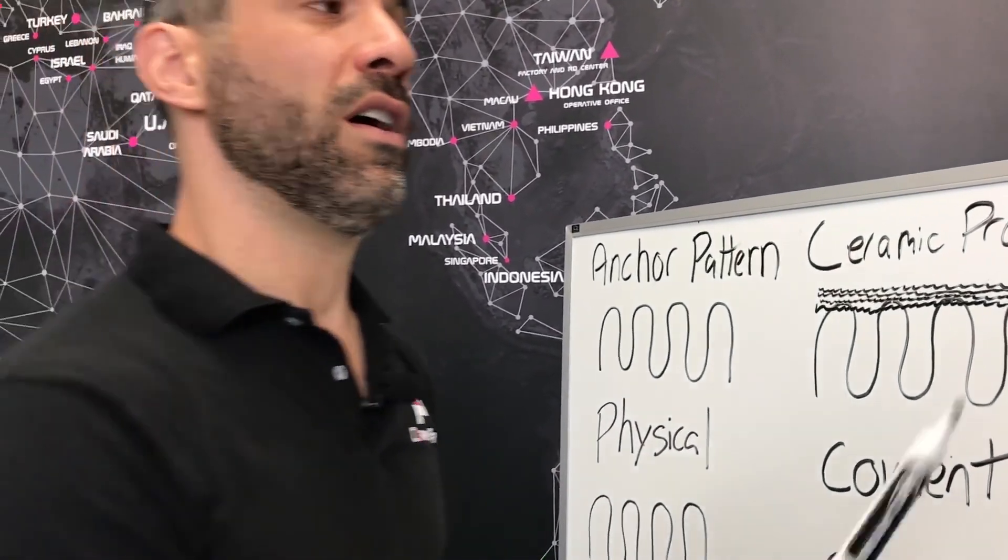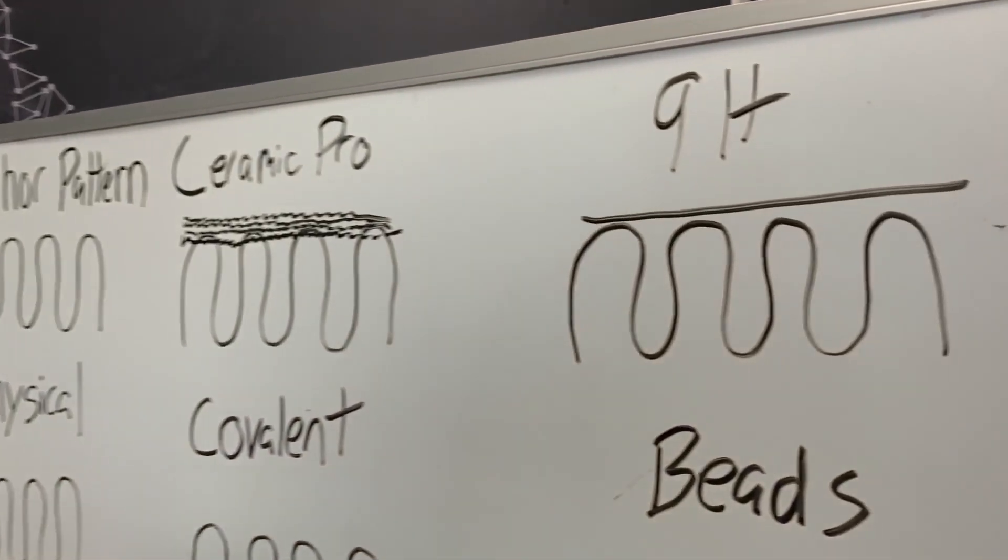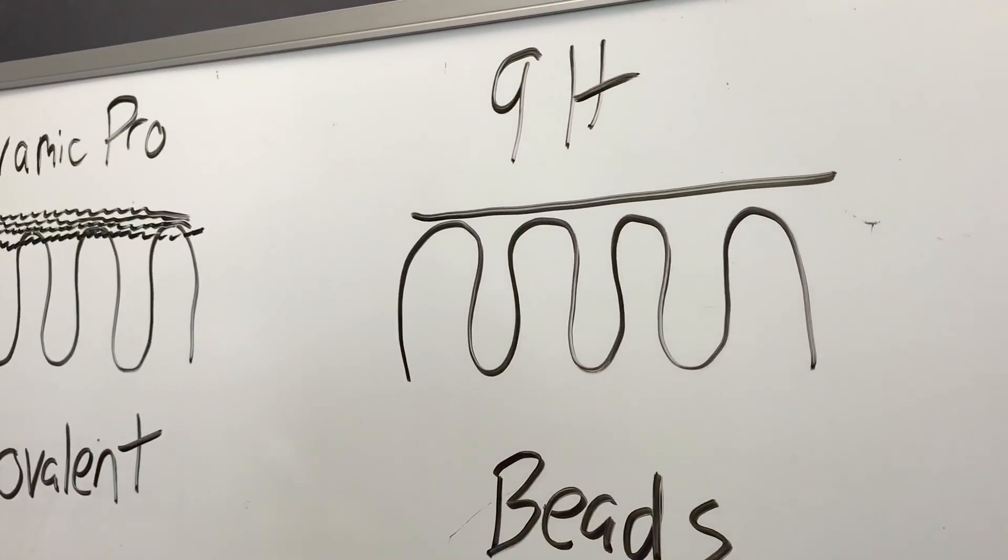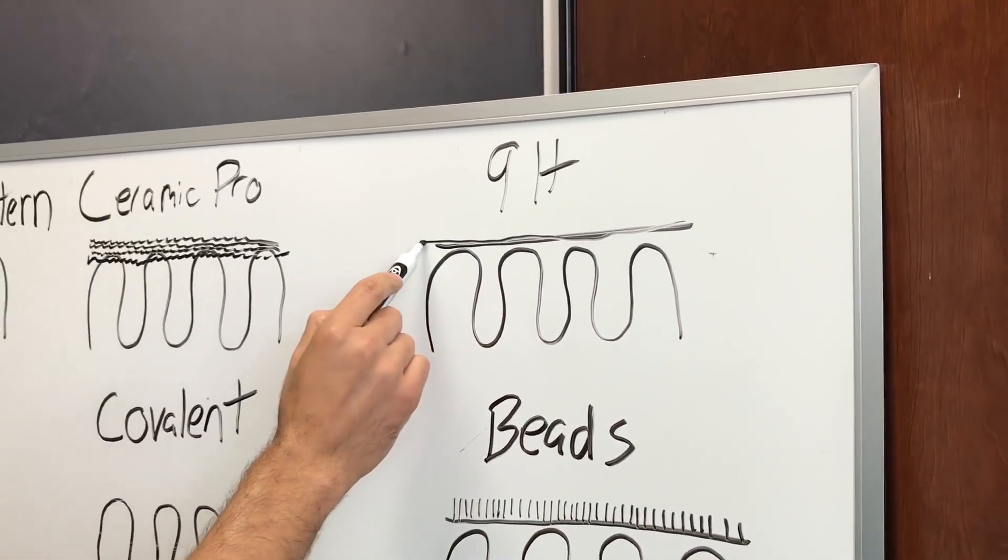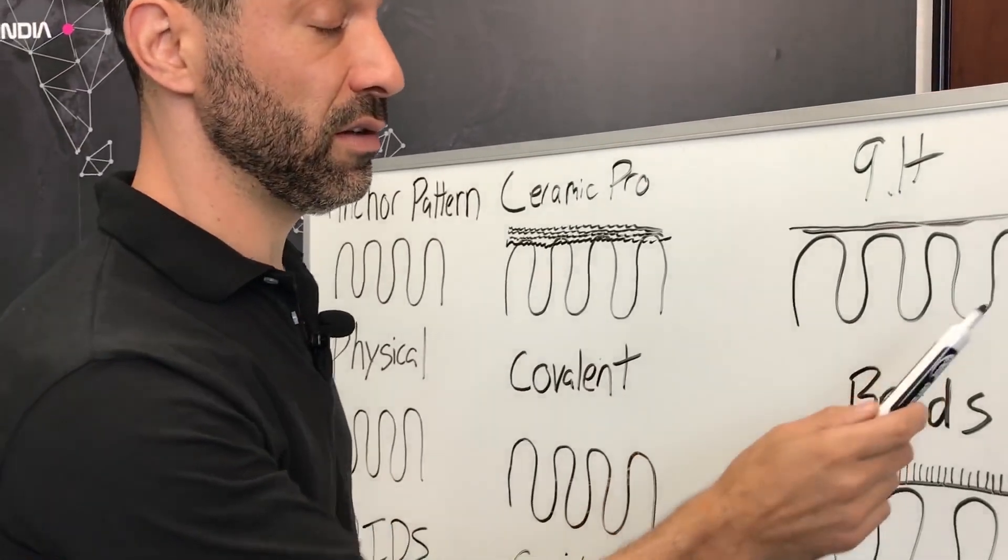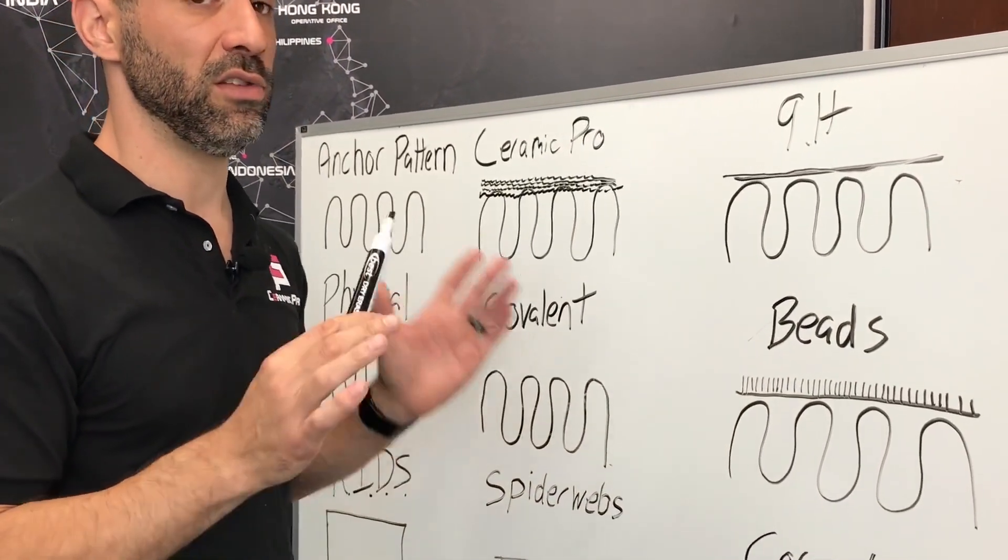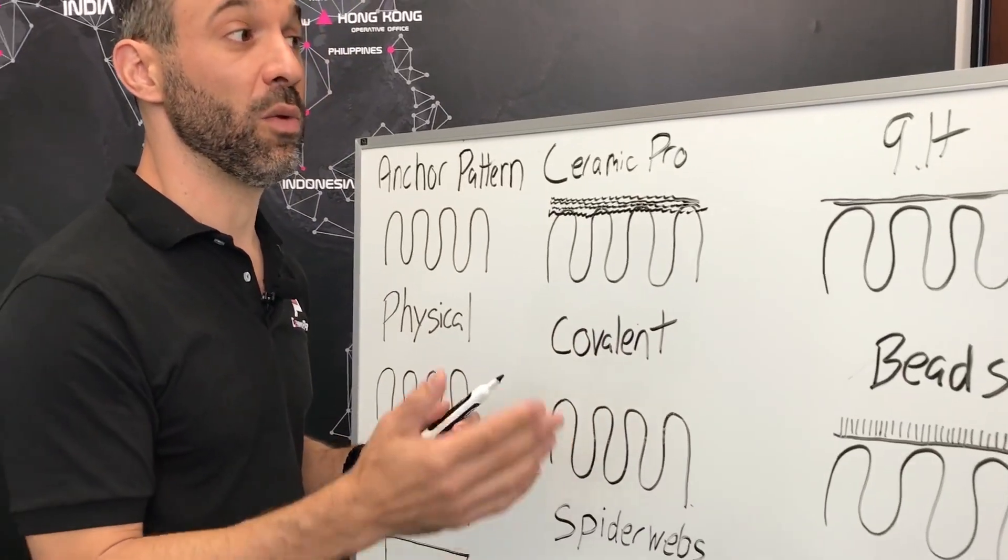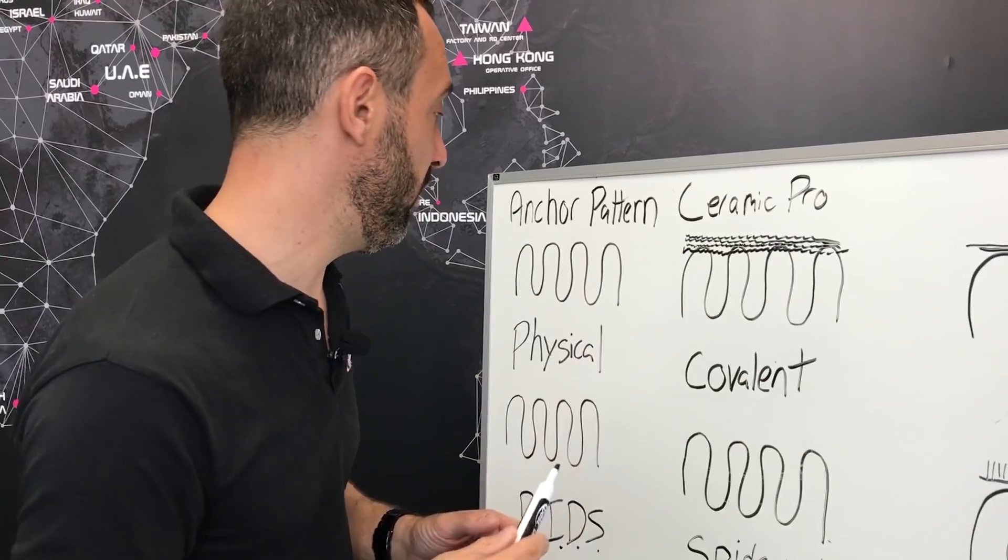That brings us to the term that you might hear so often: 9H. What is 9H? 9H is basically a measurement of hardness, and once we're able to achieve this new top substrate, you're able to get much closer to this 9H hardness than the original substrate. Most typical clear coats measure between 2 and 3H. So as you can see, we're able to almost triple the density of your original substrate.